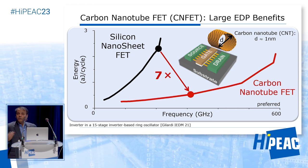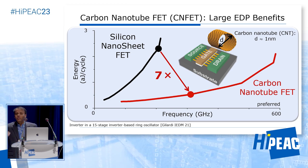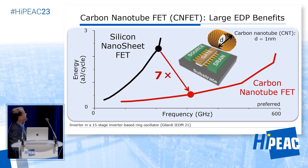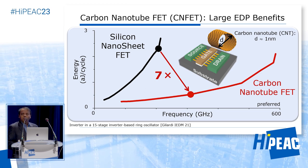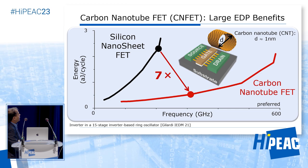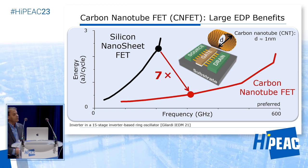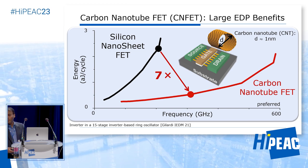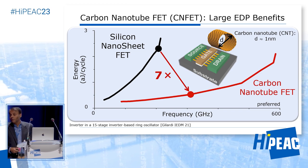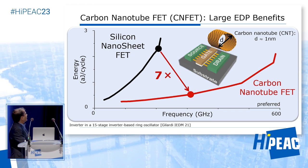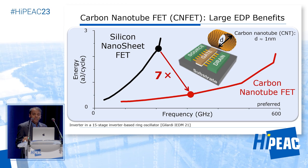You grow carbon nanotubes on a substrate or transfer them, then build source, gate, and drain contacts to get a carbon nanotube field effect transistor. Why are we looking at carbon nanotubes? This is a graph we worked on jointly with IMEC in Belgium — here is energy and here is frequency, and the preferred corner is as high a frequency as possible at as low an energy as possible. Compared to existing transistor technologies — for example a silicon nanosheet transistor currently being implemented — you get close to an order of magnitude improvement in energy delay product. After nanosheet there is something called a forksheet that gives maybe a 10% improvement, so you get a major benefit in energy efficiency right off the bat.